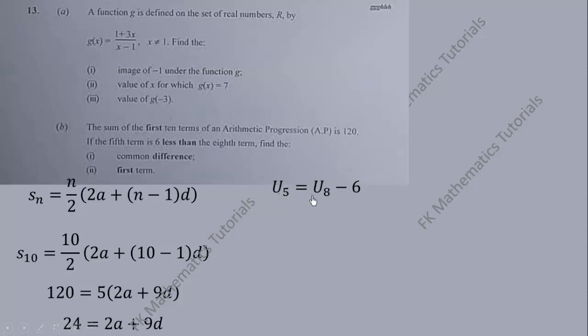The 5th term is given by a + 4d. We can use the general term U_n = a + (n-1)d to obtain this. So the 8th term is a + 7d. Setting up the equation from the relationship between the 5th and 8th terms.